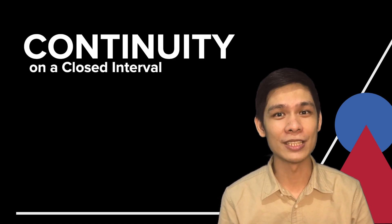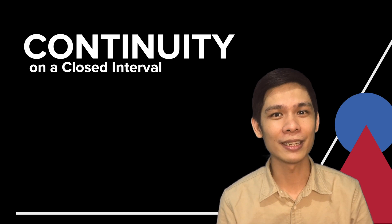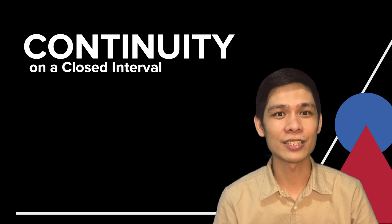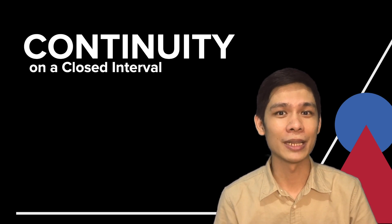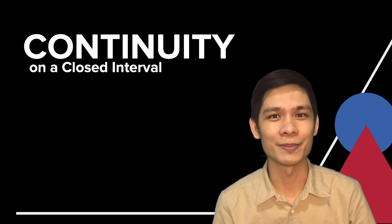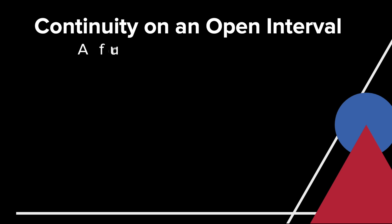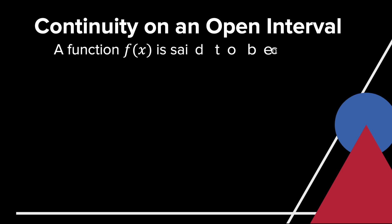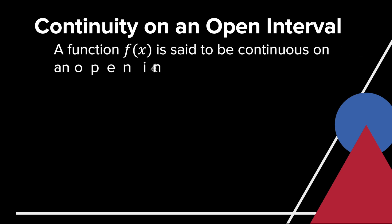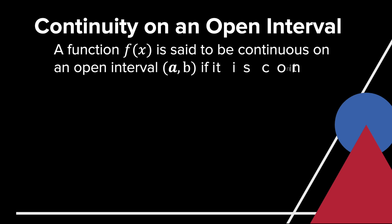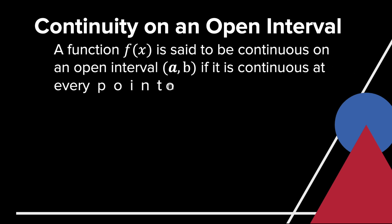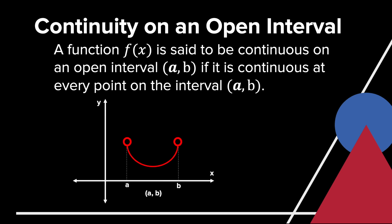Before we proceed to our main topic, let us have a discussion of some preliminary concepts. A function f(x) is said to be continuous on an open interval (a, b) if it is continuous at every point on the interval (a, b). You may refer to the graph or the illustration.